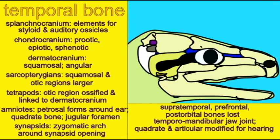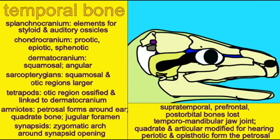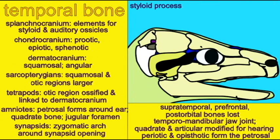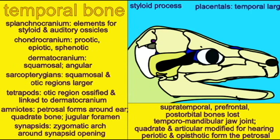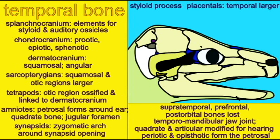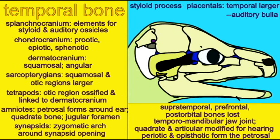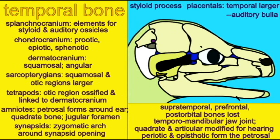The petrosal bone formed from two components, and by placental mammals, an auditory bulla then formed around the middle ear.